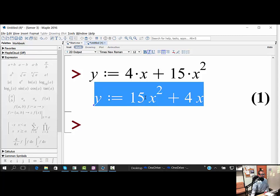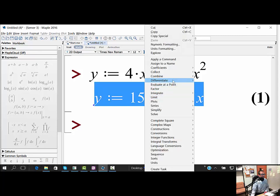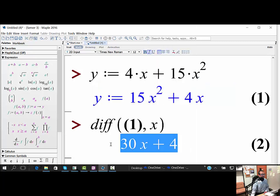I'm going to right-click on it and say differentiate with respect to x. I get the derivative: the derivative of that function is 30x + 4.